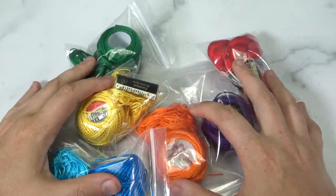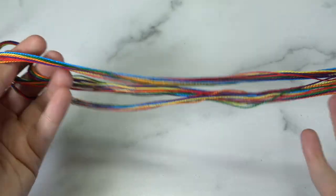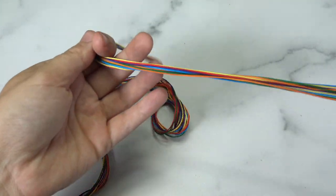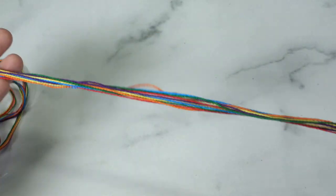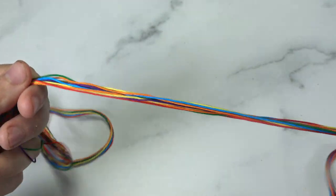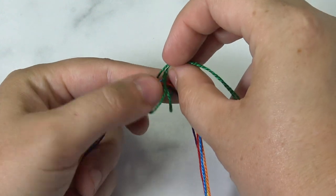For this tutorial you are going to need six colors and for each color make one string ten feet long. That's right to make this bracelet it was ten feet long. Okay fold the string in half.